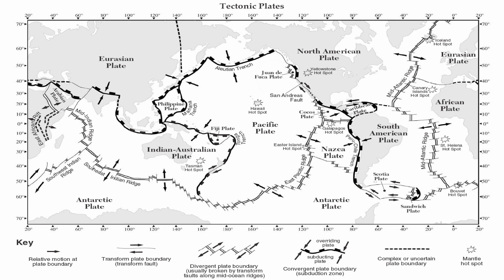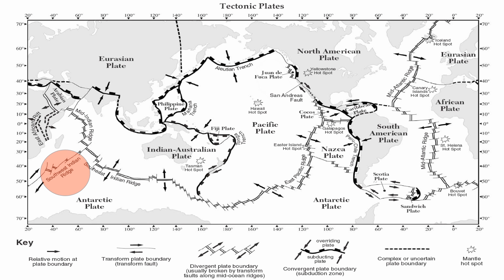If you look at page 5 in your reference table, there's a continuous mountain range called the mid-ocean ridge. It just has different names in different locations. In the Atlantic, it's called the mid-Atlantic ridge. In the Pacific, it's called the East Pacific ridge. In the Indian Ocean, it has a couple of names: Mid-Indian Ridge, Southwest Indian Ridge, and Southeast Indian Ridge. If you get a little confused, go to the bottom of your map — notice the key, the little zigzag pattern and the arrows moving apart. That's your divergent boundary.